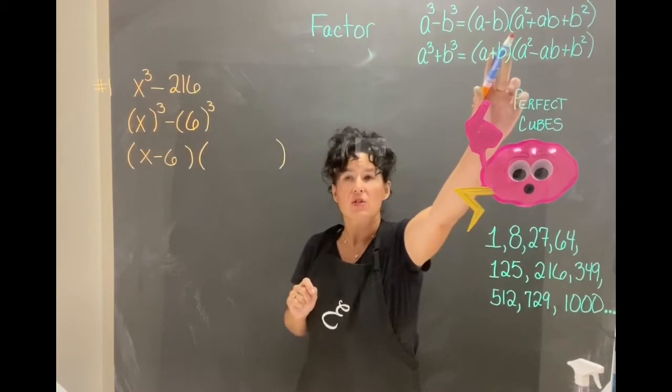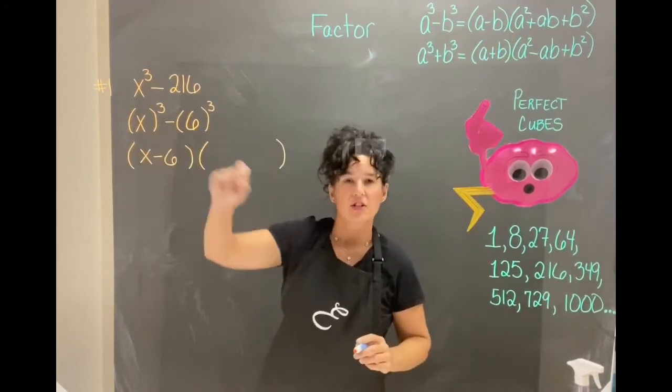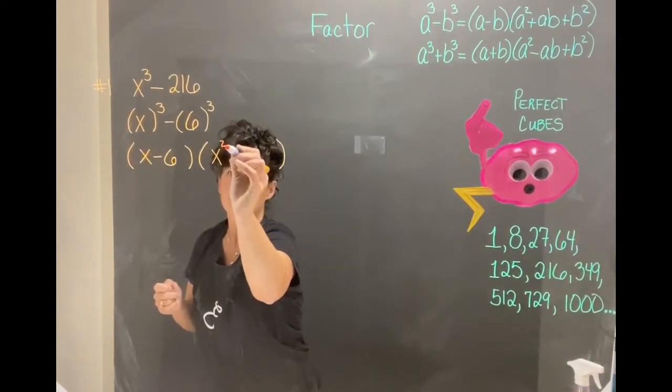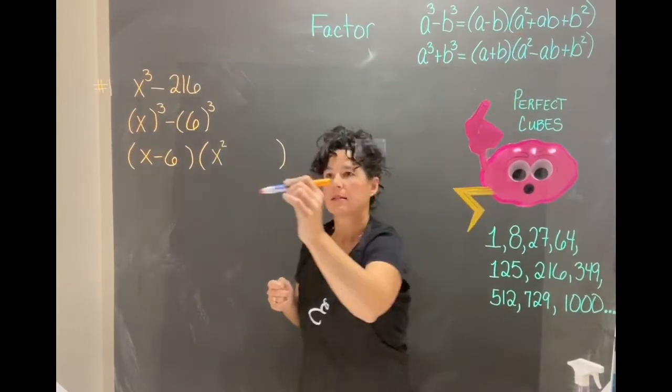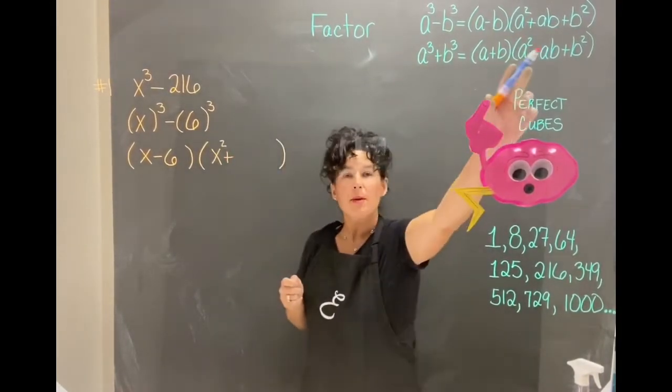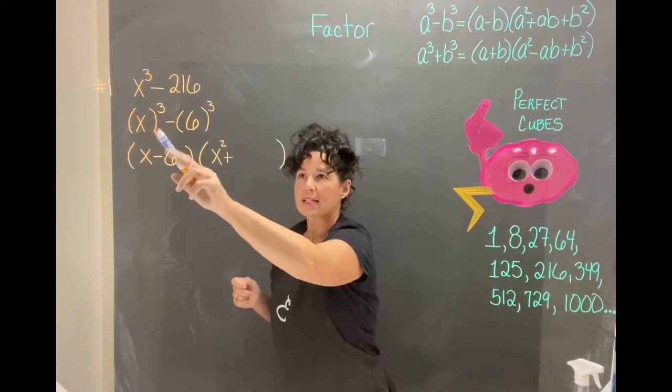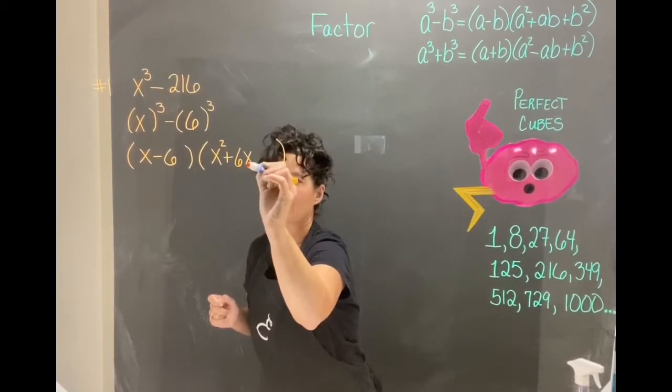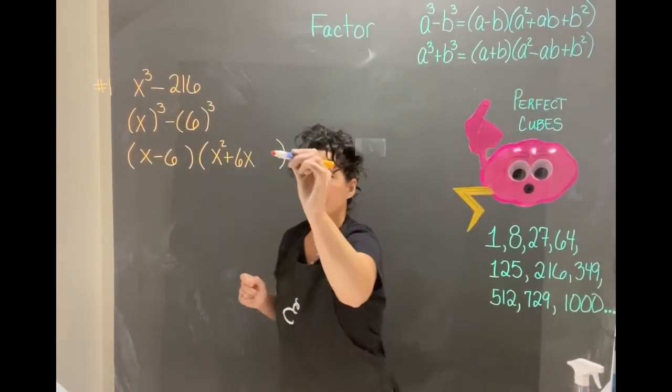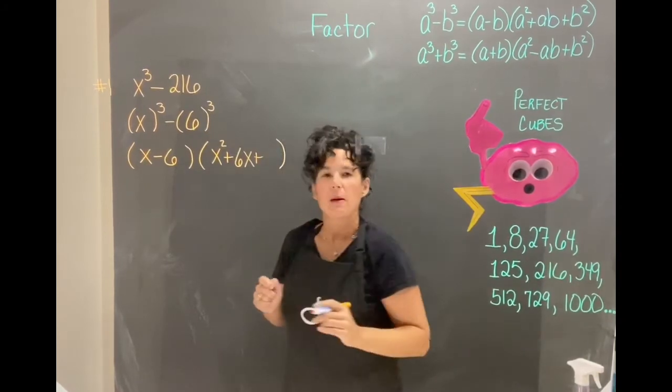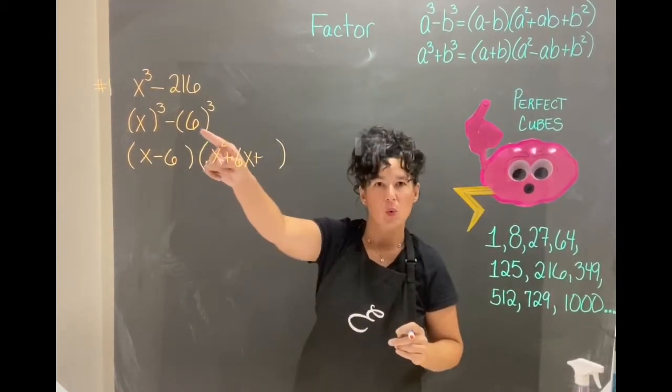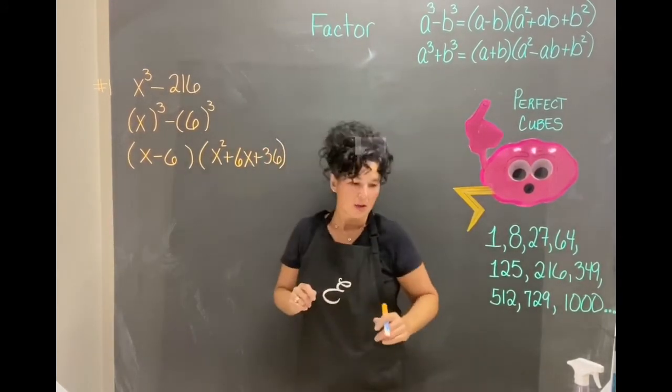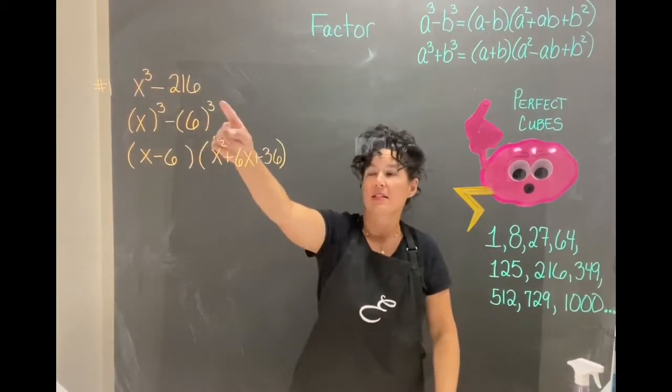Next we'll have a squared. The a is x and so if we square x that will be x squared. We have a plus ab so x multiplied by 6 which is 6x and then we have a plus and b squared is 6 squared so 6 times 6 is 36. And we have factored this difference of cube.